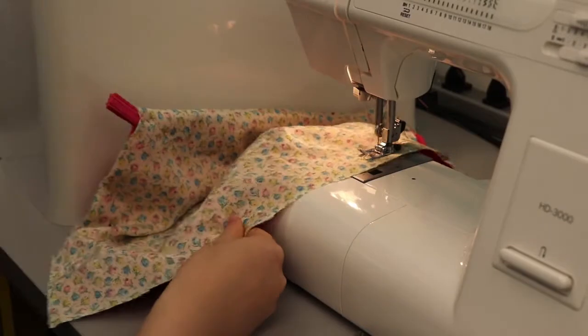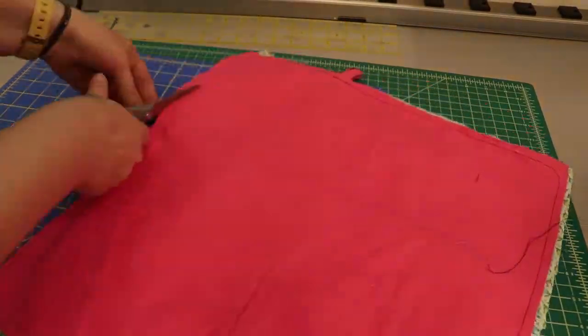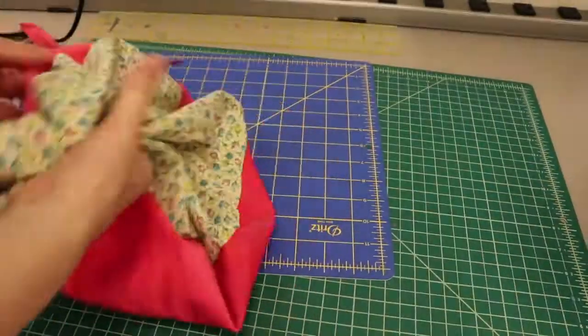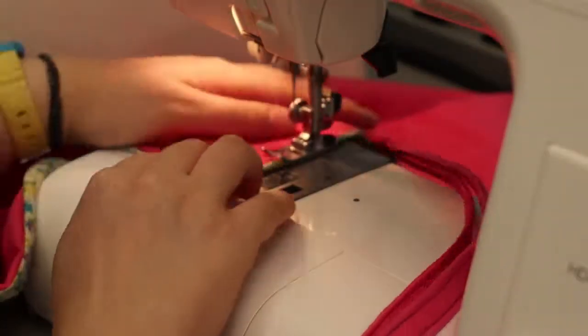Then I sewed around where I had pinned. I trimmed off all the excess and then turned it inside out, ironed it flat, and then top-stitched all the way around.